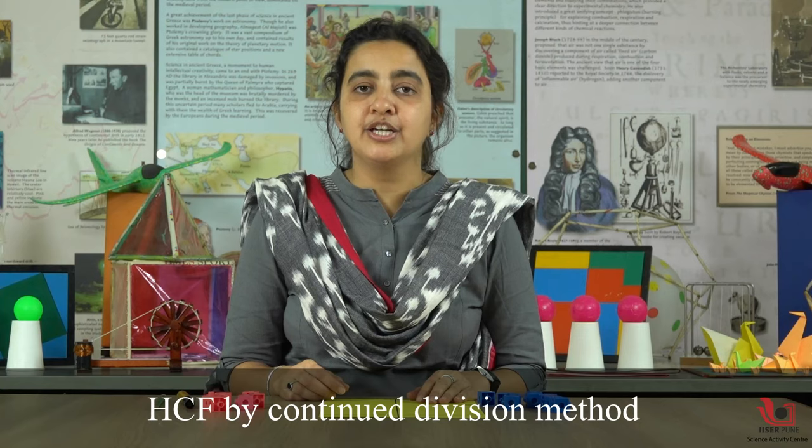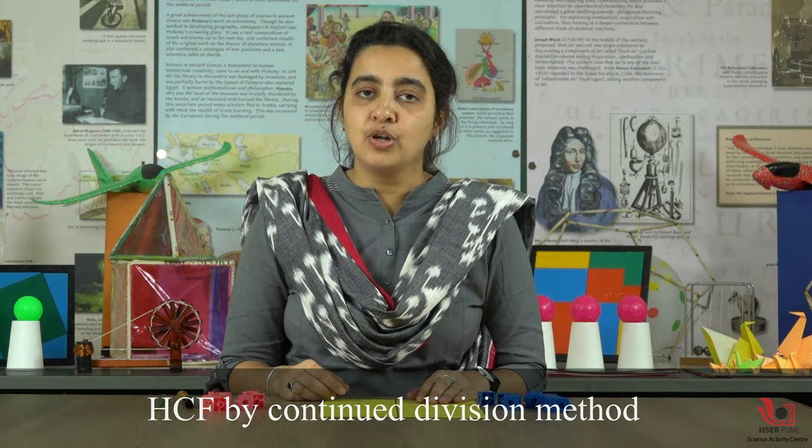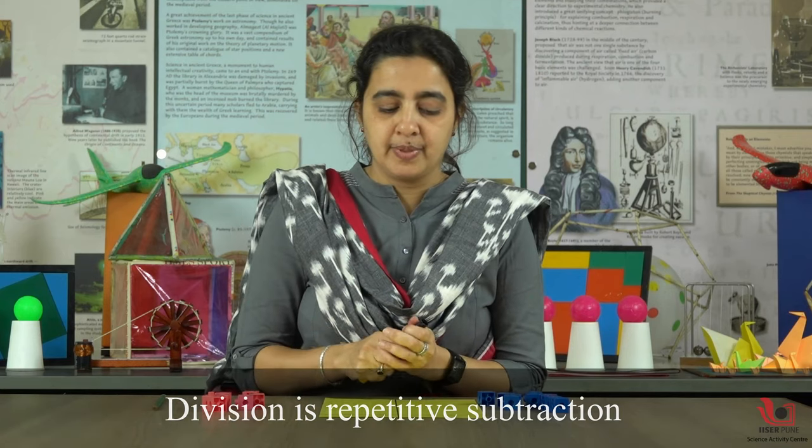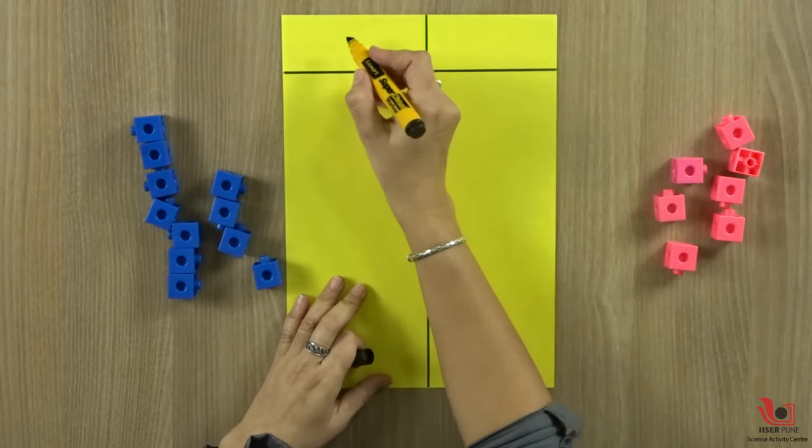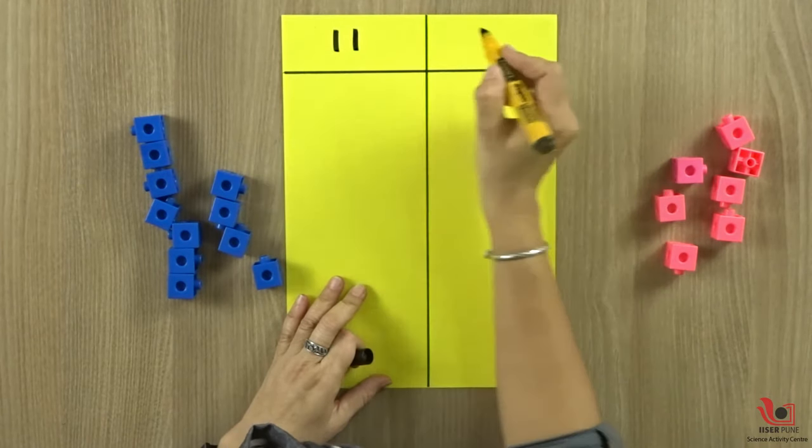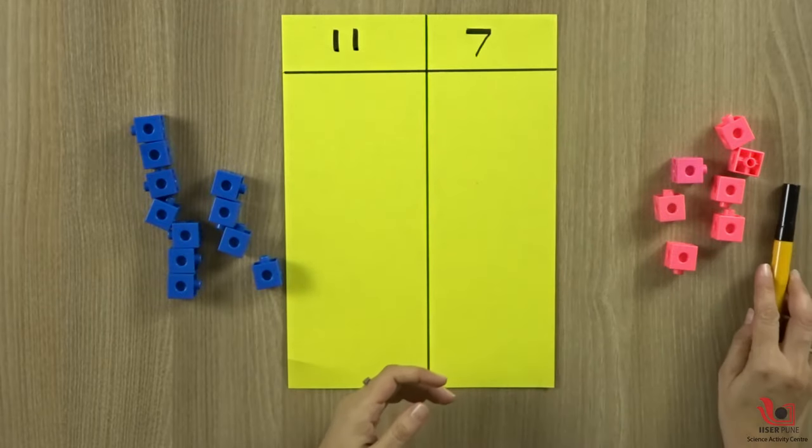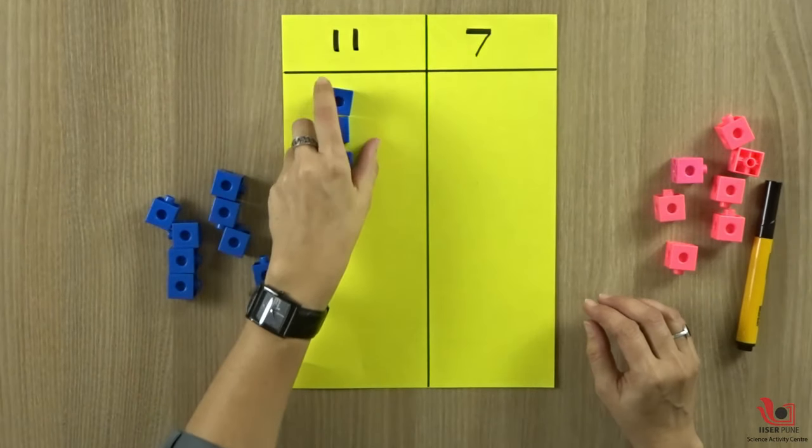Another way of finding the HCF is by continued division. As you know, division is repeated subtraction. We will take one example. Let's take the numbers 11 and 7.